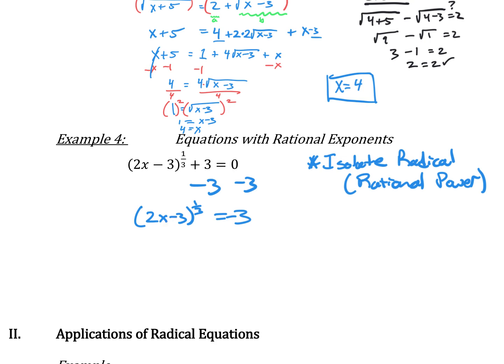Don't try to distribute this exponent — you can't distribute the 1/3 over addition or subtraction. If it were multiplication you could, but not with addition or subtraction; that gives two terms. To make the 1/3 exponent become 1, we raise both sides to the third power, because a power to a power multiplies. So 1/3 times 3 equals 1, and the radical disappears. On the right side, negative 3 to the third power is negative 27. So we get 2x minus 3 equals negative 27.